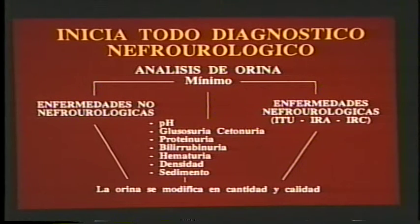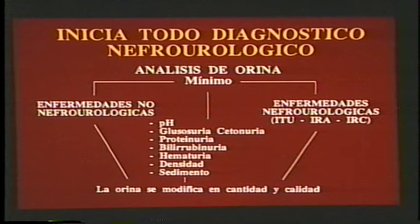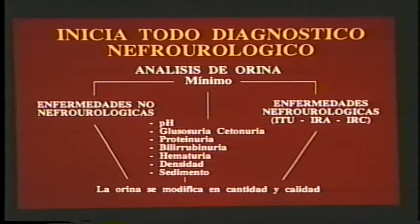Por ejemplo, una endocrinopatía. Cuando encontramos al colectar y analizar la orina un pH ácido más glucosuria y cetonuria, es prácticamente seguro que estamos ante una diabetes mellitus. El pH de la orina también puede tomarse como dato aproximativo a un disturbio ácido-base, por ejemplo a una acidosis metabólica, cuando el pH de la orina está disminuido. Si su implementación es útil para enfermedades extrarrenales, cuán útil debe ser para pacientes con enfermedad renal.